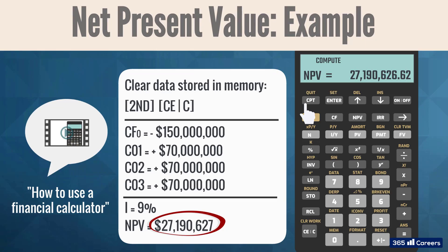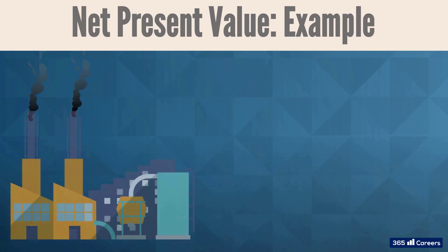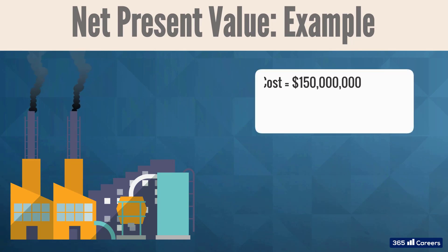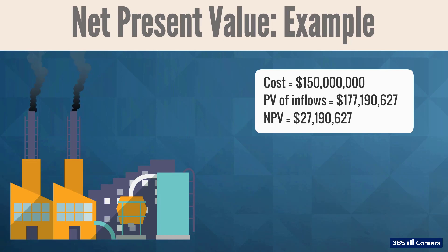So, after calculating the NPV, whether manually or by using a financial calculator, we can infer that Alpha had the opportunity to invest in a new plant by paying $150 million for an investment worth $177.19 million. Therefore, Alpha shareholders increased their wealth by $27.19 million.